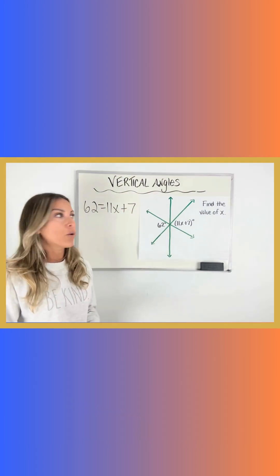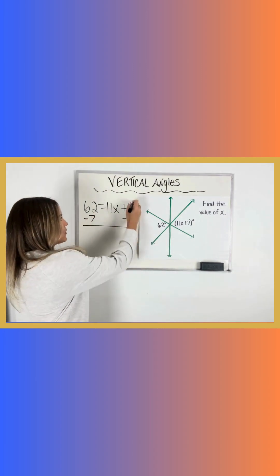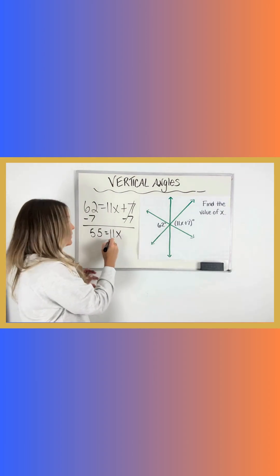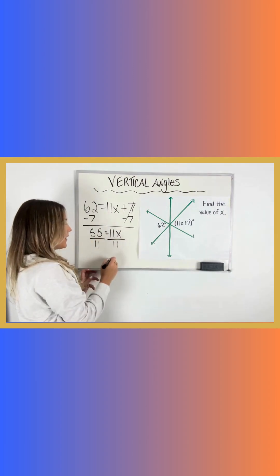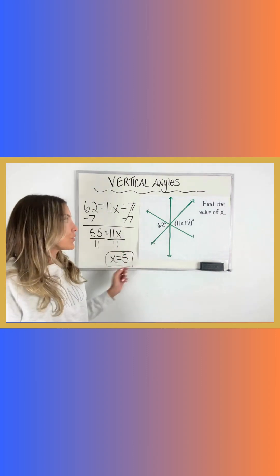Now I just have to solve a two-step equation. I'm going to subtract 7 on both sides. That's going to give me 55 equals 11x. I want that x by itself, so I'm going to divide by 11 on both sides, and that's going to give me x equals 5. And that answers my question.